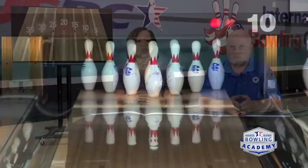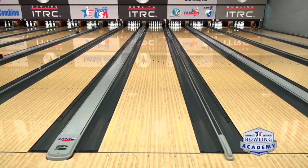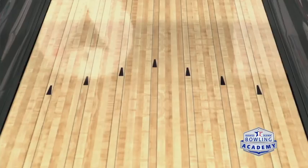A lot of beginning bowlers are taught to use the arrows because they're much closer. Beginning bowlers often tend to look straight at the pins, feeling like that's what they want to hit. But looking at the arrows gives you something closer to target, and oftentimes it's much easier to hit that mark.